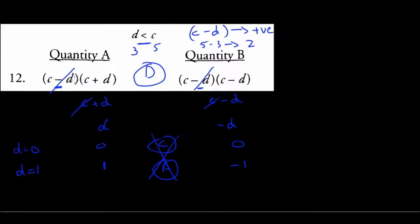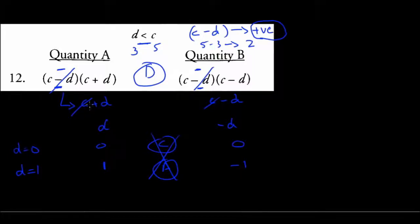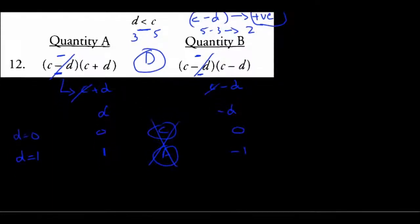The key trick is that you can drop the (c - d) bracket from both sides only because you know it's positive. When terms are being multiplied, you can drop a common bracket if you're sure it's a positive value. When terms are being added, like the c, you can drop them regardless of sign since the same value is added to both sides. This completes our quick review of the algebra section — make sure you memorize these formulas.